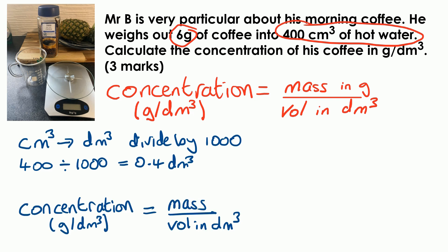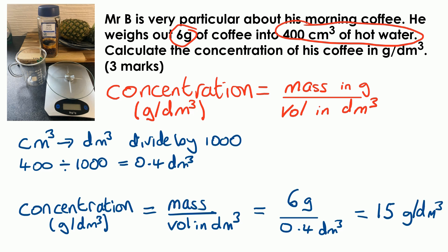So now we can put that into the main equation. Concentration is mass over volume in dm³. The mass is 6 grams, the volume is now 0.4 dm³. And the answer we get is 15 grams per dm³.